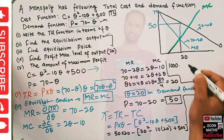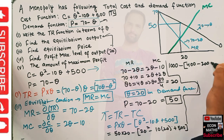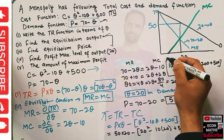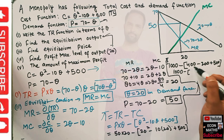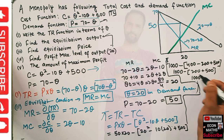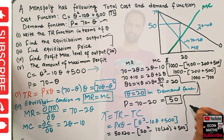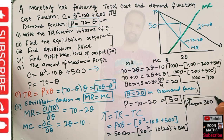Total revenue is 50 times 20, which is 1000. Total cost is 400 minus 200 plus 500, which equals 700. Therefore maximum profit equals 1000 minus 700, which comes out to be 300. I hope I made myself clear in this video. Thank you.